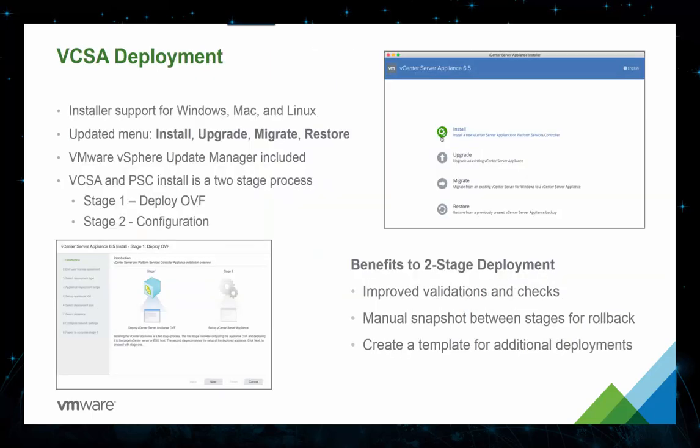The vCenter Server Appliance deployment experience has also been enhanced in vSphere 6.5. The user interface has had a facelift, but more importantly, the installation workflow is now performed in two primary stages. Stage one deploys the appliance with the basic necessities such as IP address, hostname, and sizing information including storage, memory, and CPU resources. In stage two, it completes the configuration by setting up SSO and role-specific settings.